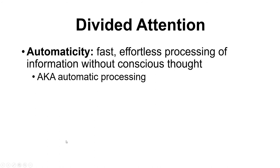This is where the textbook goes back into divided attention, which ties into our earlier discussion of automatic versus controlled or effortful processing. The textbook calls it automaticity — fast, effortless processing without conscious thought. I've called it automatic processing; there are lots of different names for these terms, but the textbook doesn't technically use 'automatic processing.'